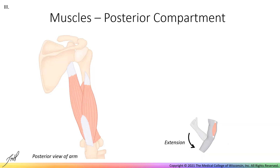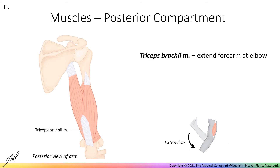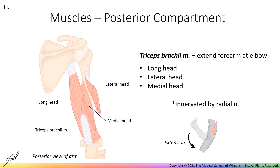The only muscle in the posterior compartment of the arm is the triceps brachii muscle, which has three heads: long, lateral, and medial. The long head attaches just inferior to the glenoid fossa, while the lateral head originates along the posterior shaft of the humerus. If we reflect the lateral head, we can see the medial head laying right along the bone. All three heads insert via a common tendon onto the olecranon of the ulna. The triceps function together to extend the forearm at the elbow and are all innervated by the radial nerve.